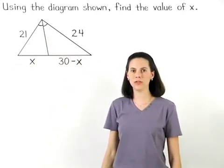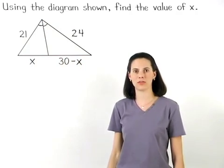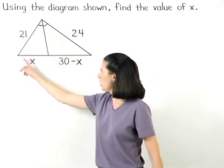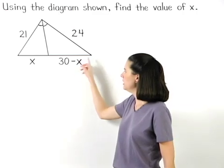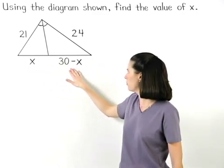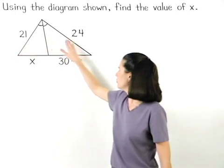According to the triangle angle bisector theorem, the ray divides the opposite side of the triangle into segments that are proportional to the other two sides.